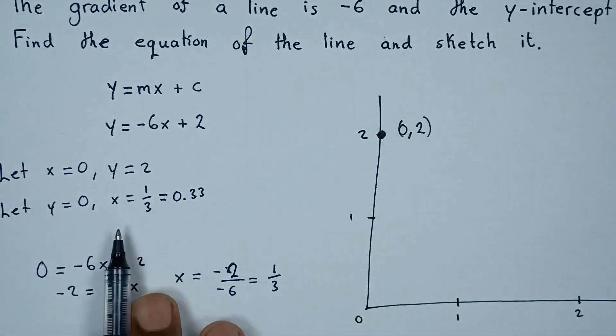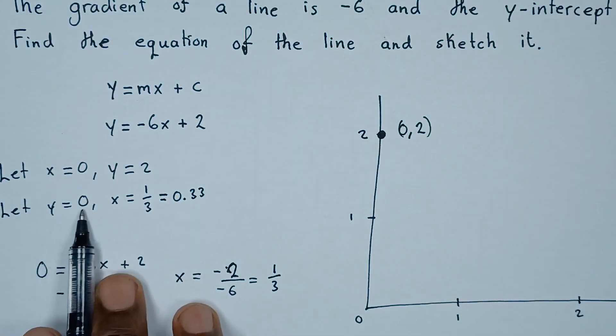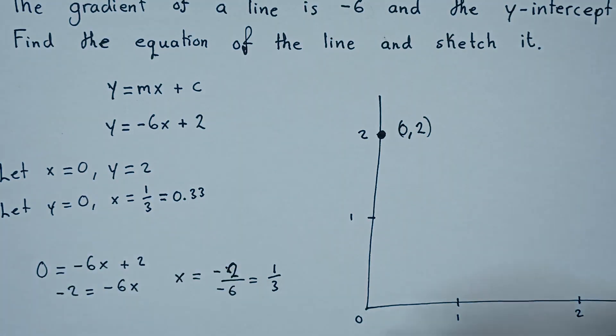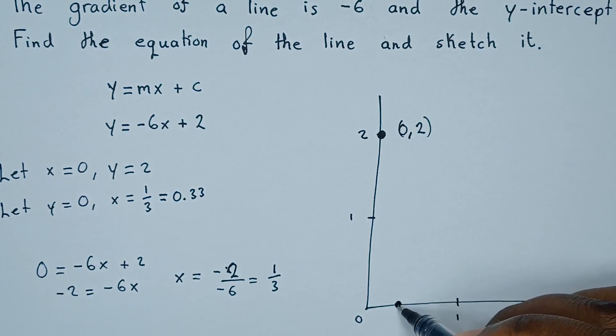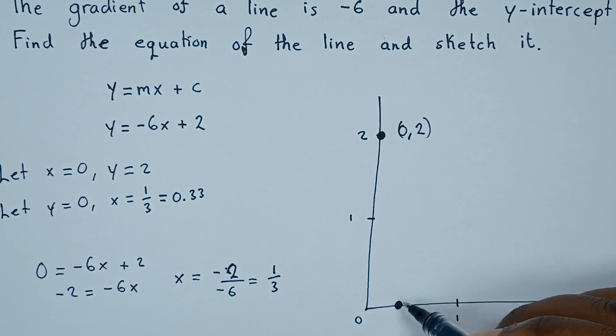Then when y is 0, x is 0.3. So 0.3 should be somewhere here. So these are the two points.